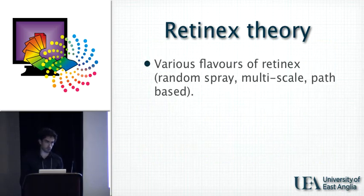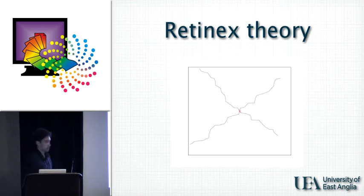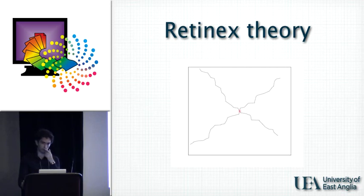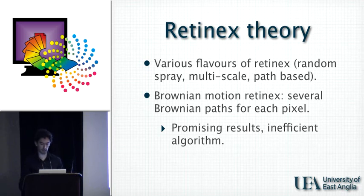There have been different implementations of retinex: there's random spray, multi-scale, and path-based, which was also the original idea. The Brownian motion retinex roughly generates several Brownian paths for each pixel, more or less this way — these are not actual Brownian paths, I'm just showing some paths converging to a pixel. The reason is that if we just run a simulated Brownian motion over the pixels of an image, we do not have control over how many times each pixel will be visited, so we might have an imbalance across the image. This Brownian motion retinex had very promising results.